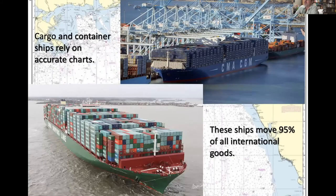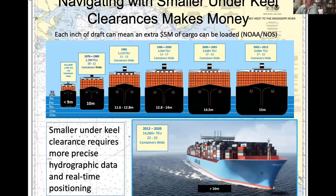Looking at shipping: cargo and container ships rely on accurate charts. These ships move 95% of all international goods. Navigating with smaller under-keel clearances makes money. A NOAA diagram shows that each inch of draft can mean an extra $5 million of cargo loaded on a ship. As ships get bigger and drafts get deeper, the tolerances between the keel and the seafloor decrease, requiring more precise hydrographic data and real-time positioning.